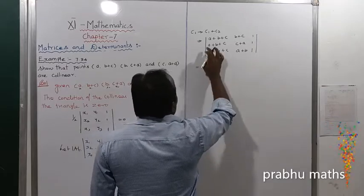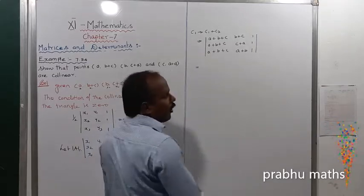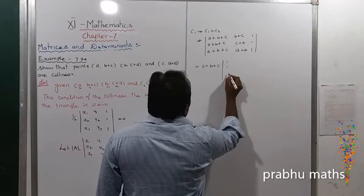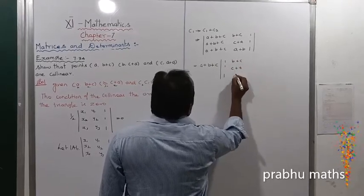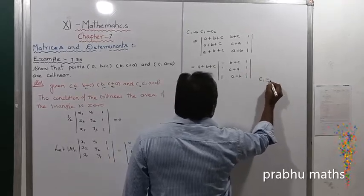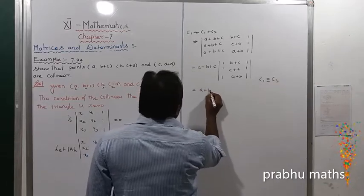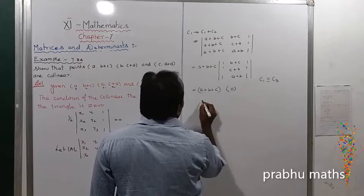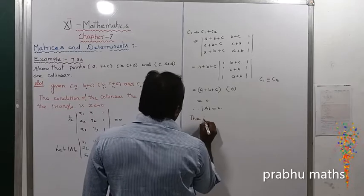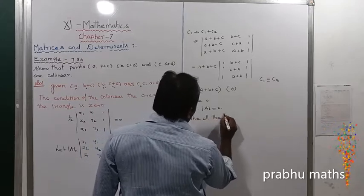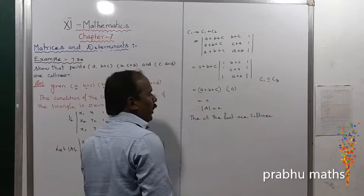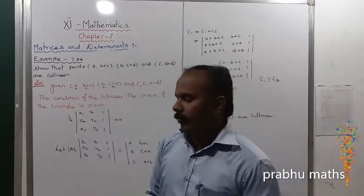The common factor A+B+C can be taken out from column 1. So we have (A+B+C) times the determinant of 1, 1, 1; B+C, C+A, A+B; 1, 1, 1. Now C1 is identically equal to C3. Therefore this determinant is equal to zero, so delta of A equals zero. Hence all the given points are collinear.